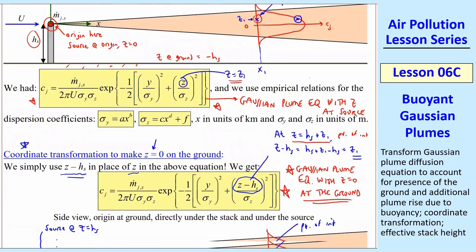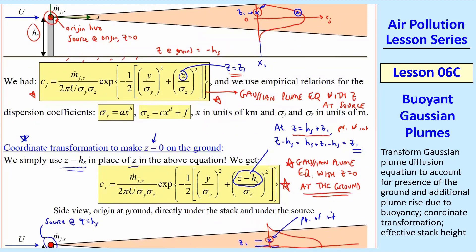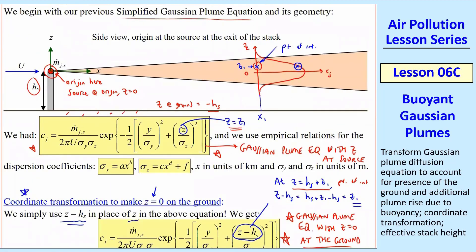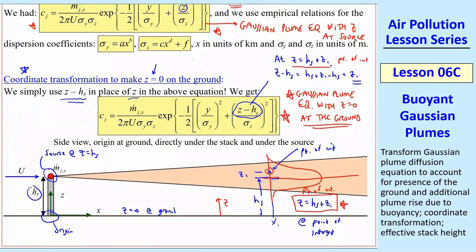So in other words, these two are identical at any point of interest as long as we use the proper z, which now is from the ground location. So z is 0 at the ground and goes up, whereas here, z was negative hs at the ground, and we went up from the origin at the source. So that's our first transformation, and all we did was change the z coordinate.